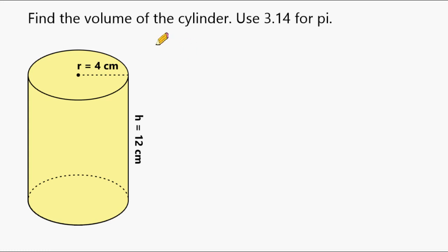So what we're going to do first is state our formula, which is volume equals pi times radius to the second power multiplied by the height of the cylinder.